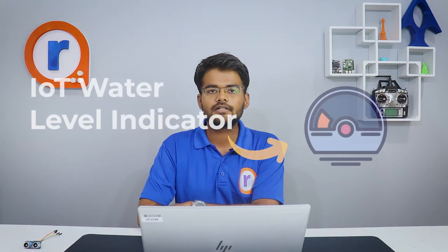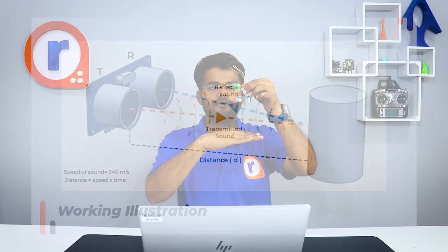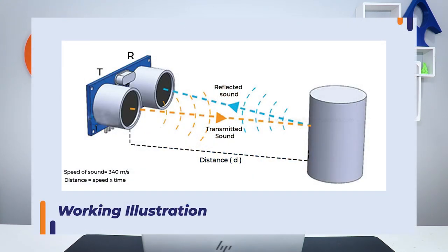Hello and welcome to Robu. Today we are going to make an IoT Water Level Indicator. By using this project we can view the water level from anywhere in the world. For this we are going to use one ultrasound sensor HC-SR04. This sensor will emit ultrasound, the sound will reflect from the water level and will be received, allowing us to calculate the distance and get the water level in the tank.